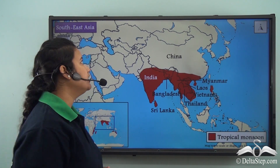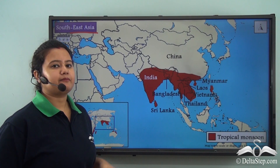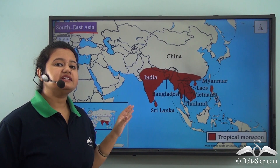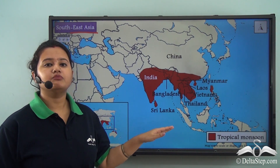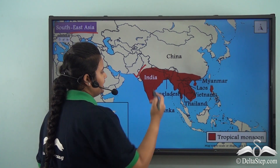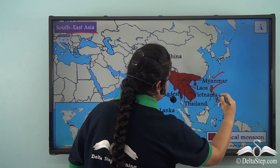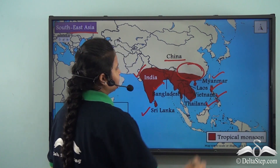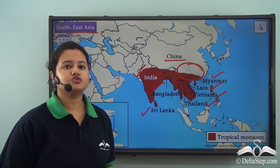The tropical monsoon region is most prominent over Southeast Asian countries. As shown in this zoomed-in map of the southeastern portion of Asia, these countries include India, Bangladesh, Sri Lanka, Myanmar, Laos, Vietnam, Thailand, and the southeastern parts of China.